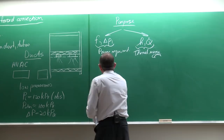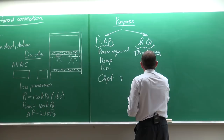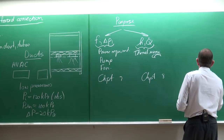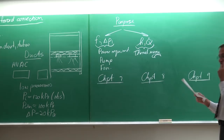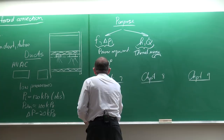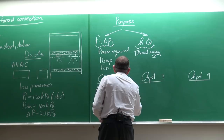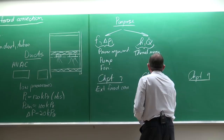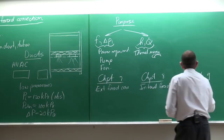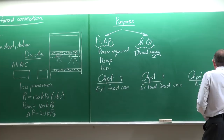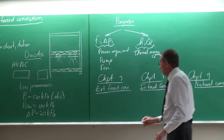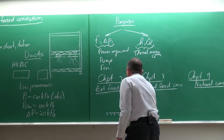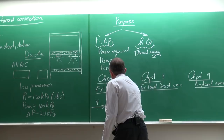Just to summarize the bigger picture: chapters 7, 8, and 9 are all three about convection. Chapter 7 was on external forced convection. Chapter 8 will be on internal forced convection. Chapter 9 would be natural convection. With external forced convection, we had a surface, a free stream velocity, and two boundary layers.